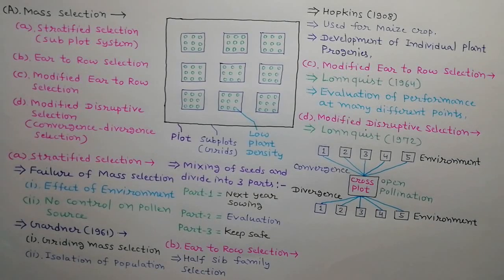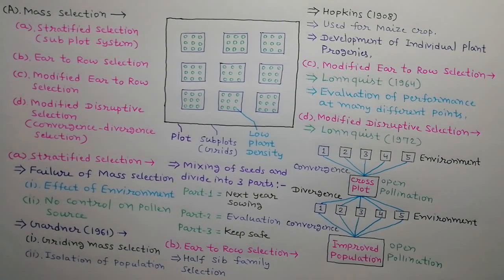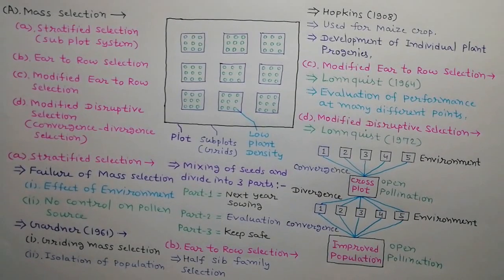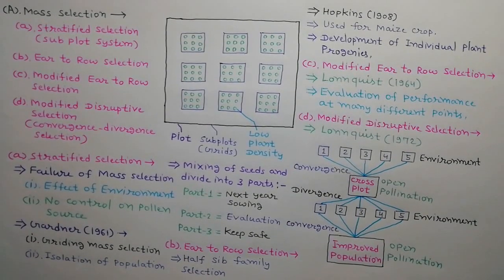Next year, take equal amount of seeds from five places and grow them as an improved population. This is called convergence. Allow open pollination. Collect seeds as a mass. This is called improved seed mass.